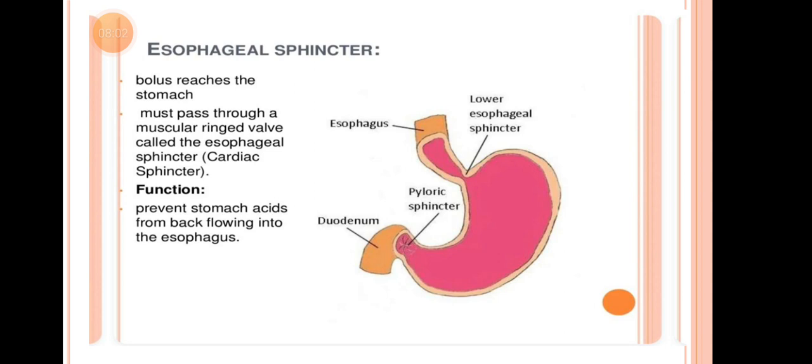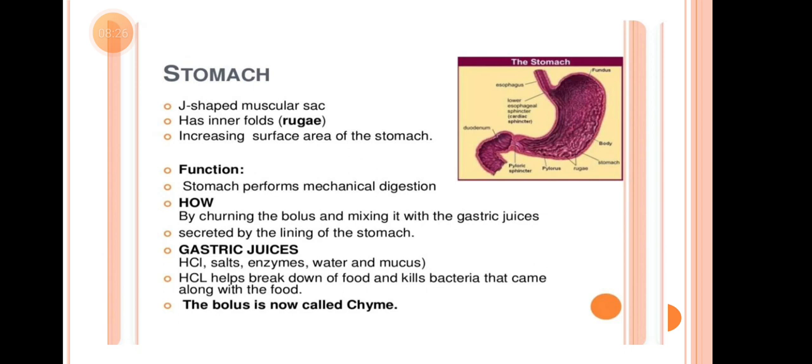The sphincter closes so that food cannot come back out, reducing chances of regurgitation. Its function is to prevent stomach acid from back-flowing into the esophagus, as that could damage the mucous lining of the esophagus.